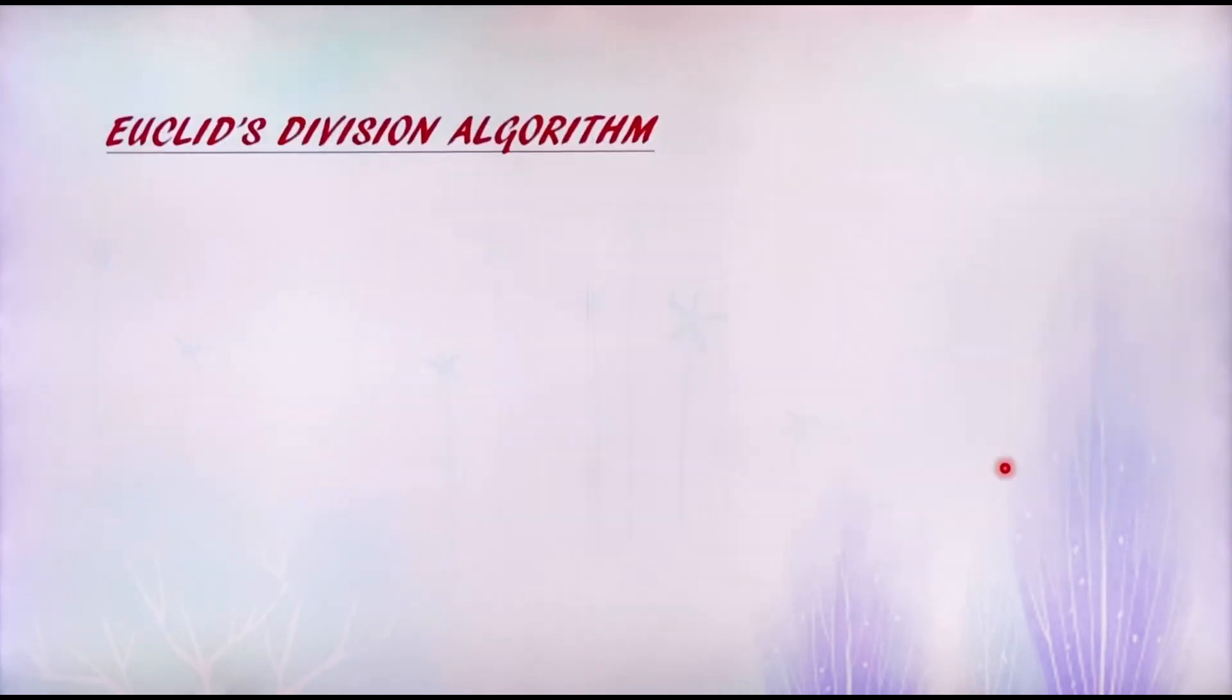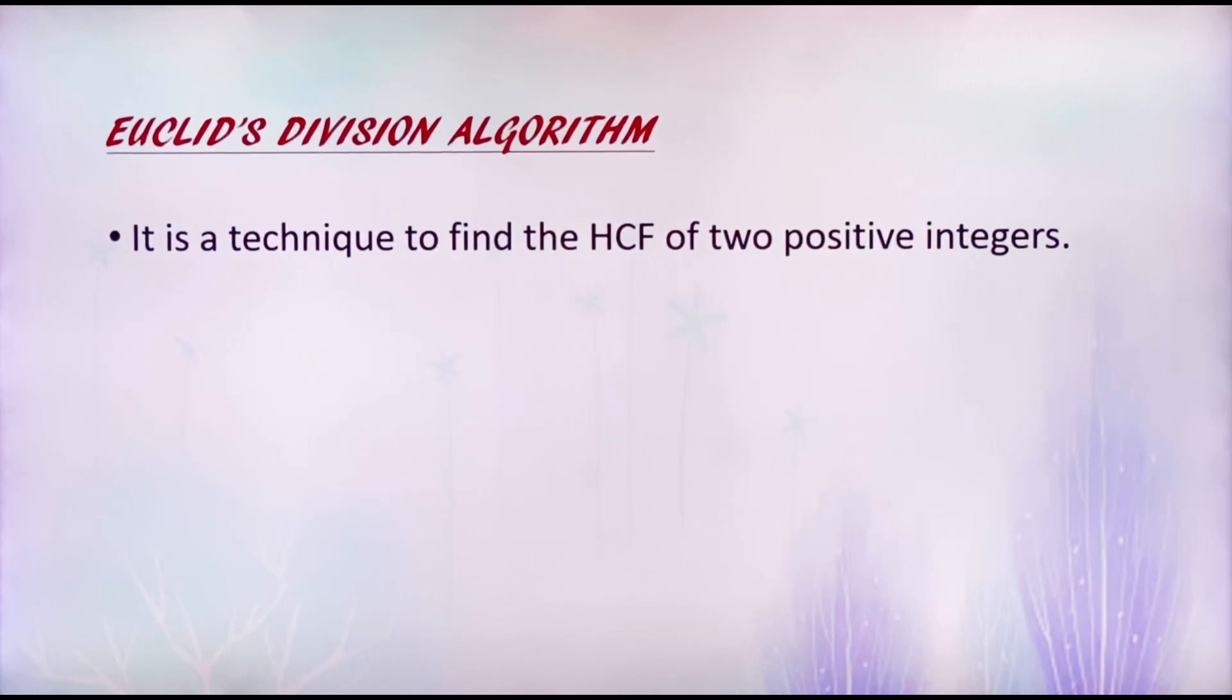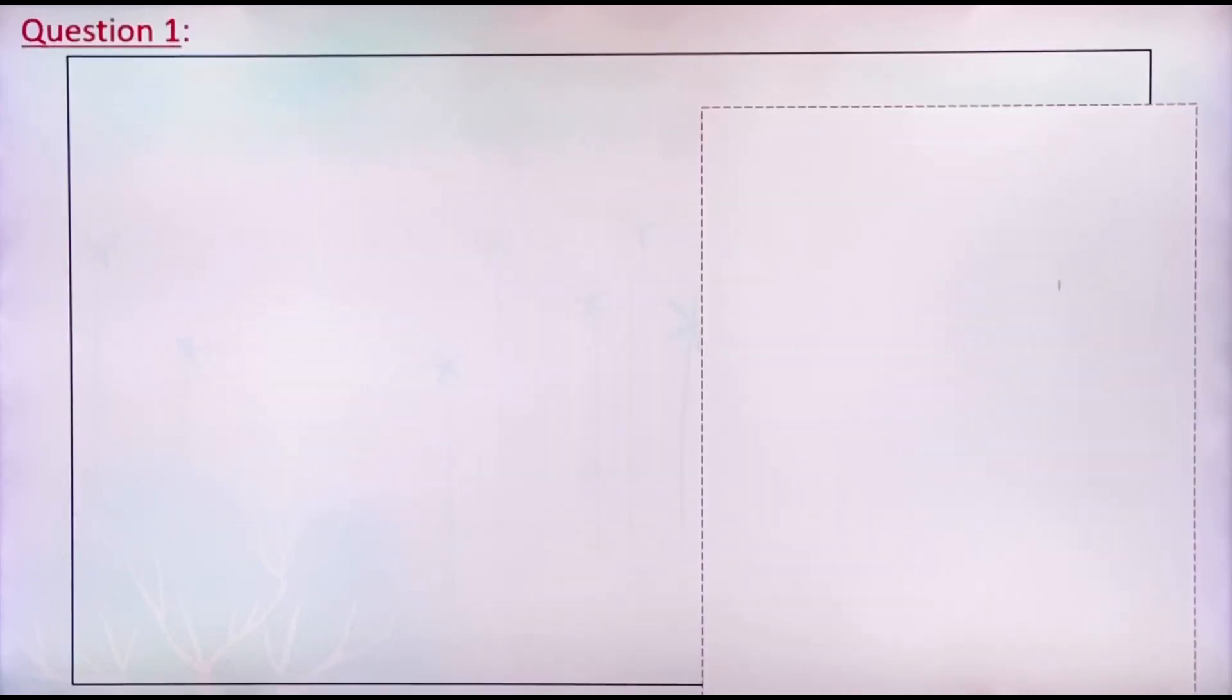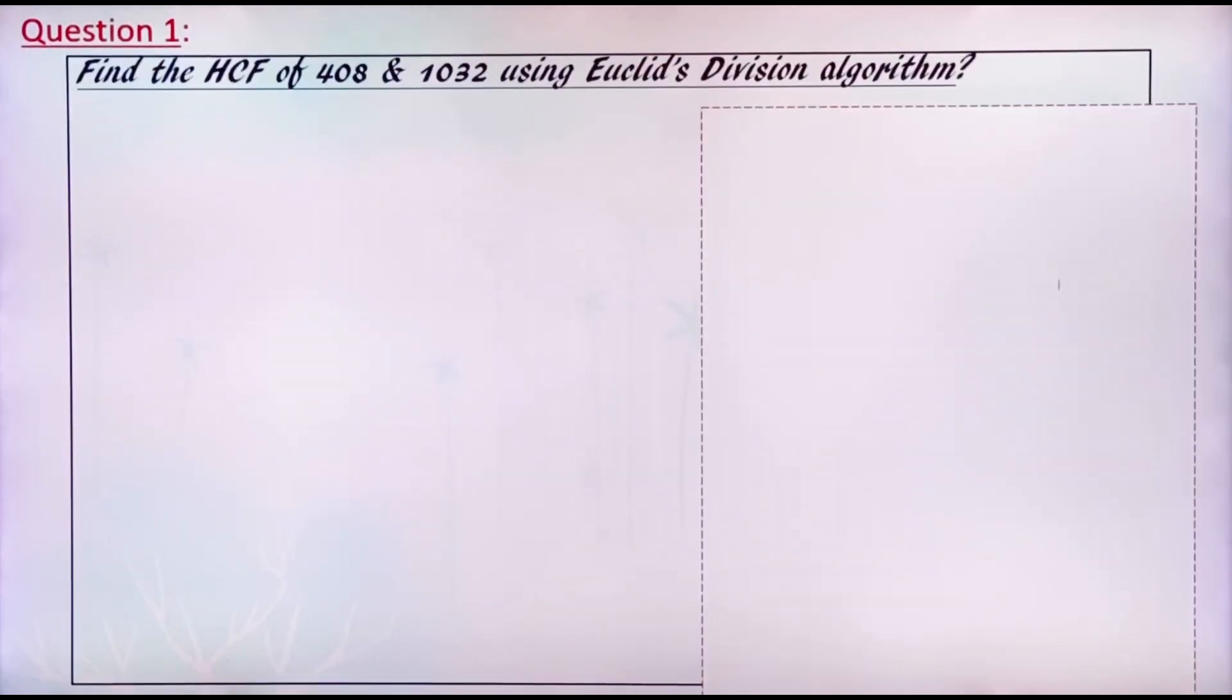Let's see, what is Euclid's division algorithm? It is a technique to find the HCF of two positive integers. The basis of this algorithm is Euclid's division lemma. Let's study this algorithm with the help of some questions. Question 1: Find the HCF of 408 and 1032 by using Euclid's division algorithm.